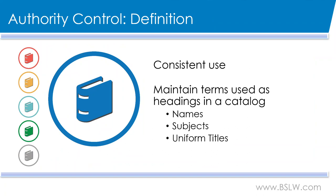Additionally, authority control is the consistent use and maintenance of these official forms of headings, whether they're names, subjects, uniform titles, etc. The authorized versions of these headings are maintained in large authority databases, such as the name and subject authority files from the Library of Congress and the Libraries and Archives Canada, and there are many other authority databases as well.